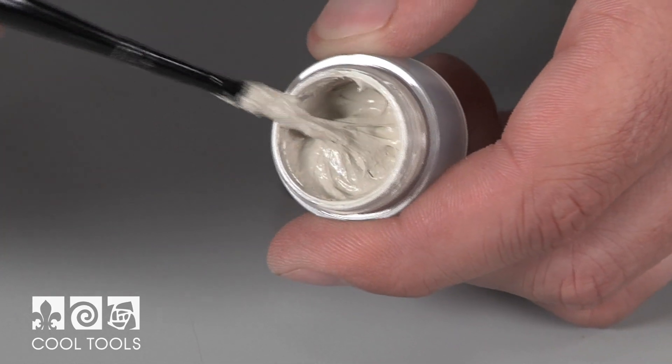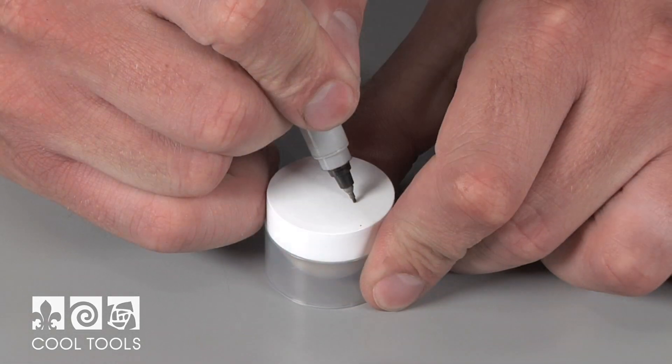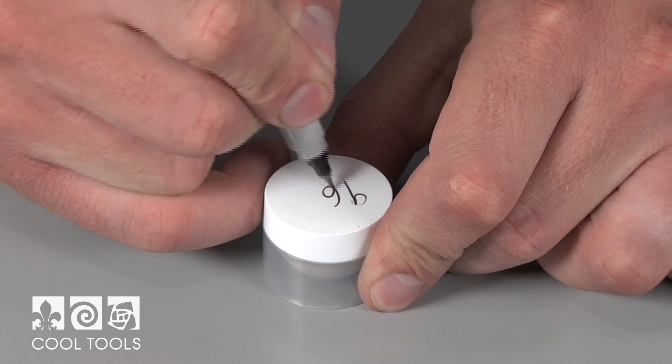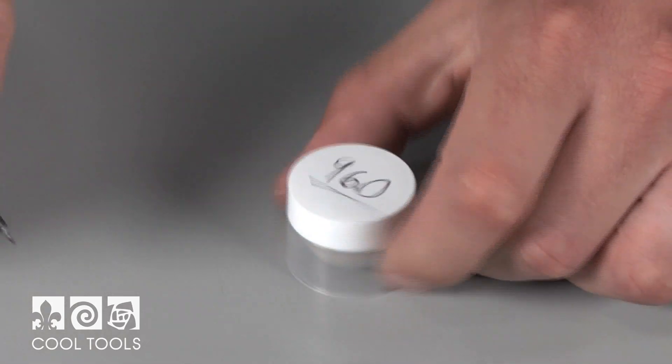You can even make slip with PMC 960, just like all other metal clays. Simply label your 960 slip container to keep it separate from your other silver slips.